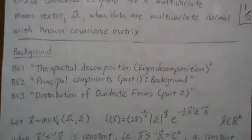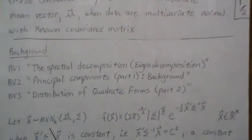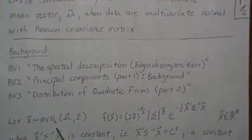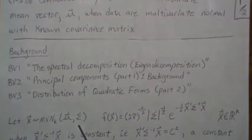We're going to let X be a multivariate normal random variable in k dimensions with some mean vector and known covariance matrix.